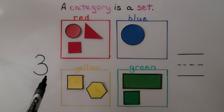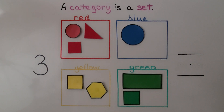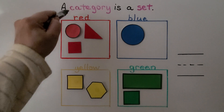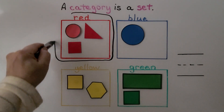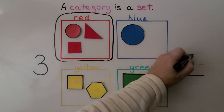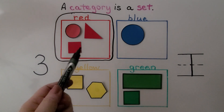Here we have a number three on the side. We need to circle the category or categories that contain three shapes. Which category contains three shapes? If you said the red one, you're right — one, two, three shapes are in this red category. We need to circle it. And how many categories had three shapes in them? Just one — just the red one. We need to write the number one over here. One category contained three shapes.